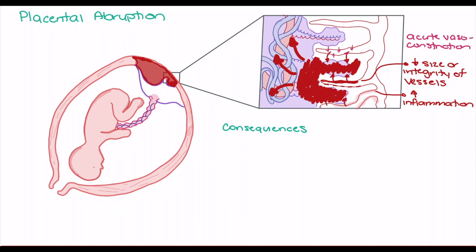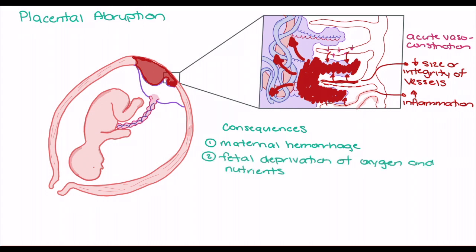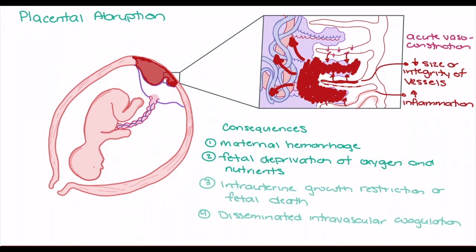This separation of the placenta from maternal circulation has serious consequences. As it is the maternal circulation in the decidua basalis that ruptures, maternal hemorrhage is a significant consequence of placental abruption. As the placenta separates from maternal circulation, the fetus becomes deprived of oxygen and nutrients, which can lead to intrauterine growth restriction or fetal death. The mother is also at risk of death if bleeding is not controlled, as disseminated intravascular coagulation or hemorrhagic shock can occur.